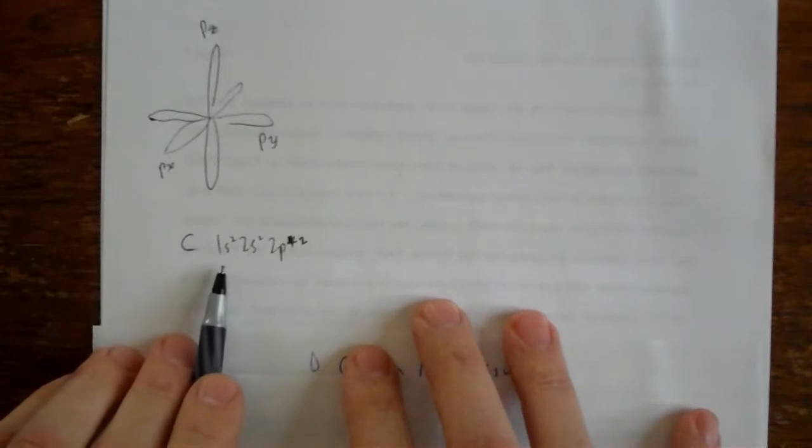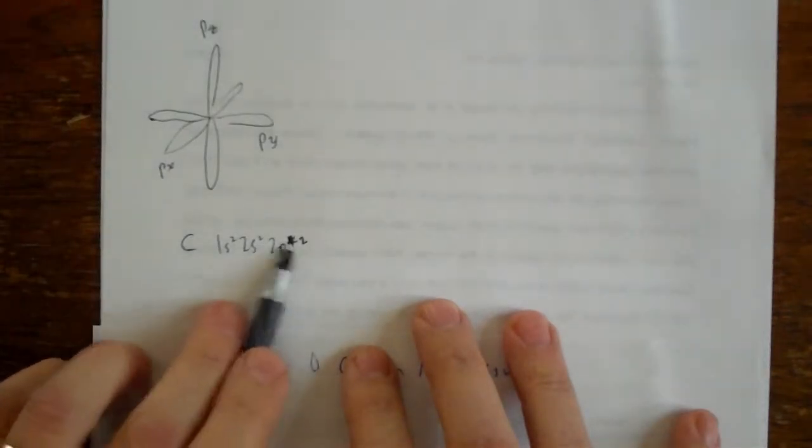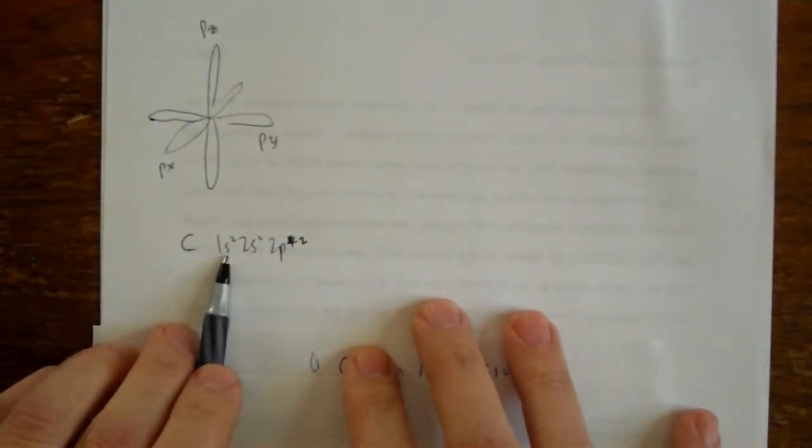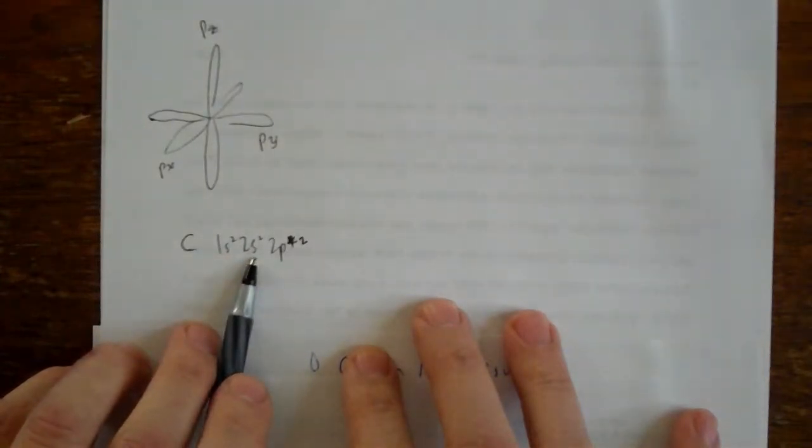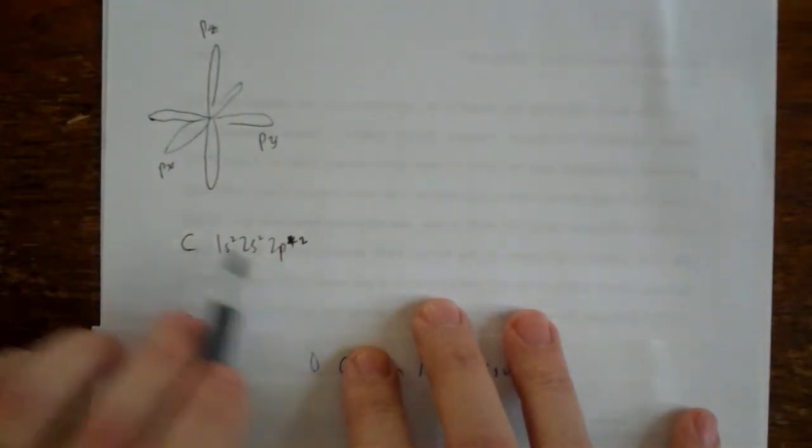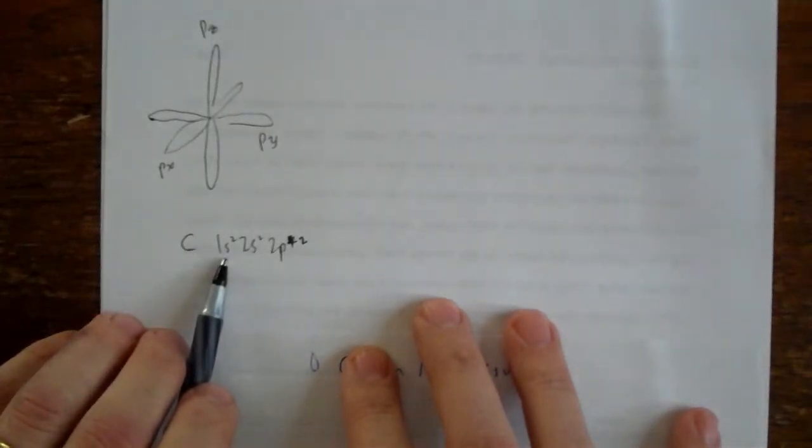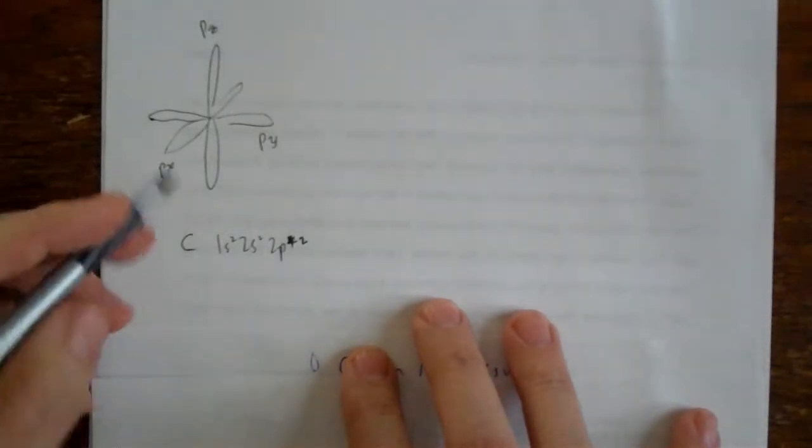And you may recall that this is the first shell, and here's the second shell. Here's a subshell, an S, and it has a shape. Here's another subshell, and it has a shape. There's another subshell, and it has a shape. You remember the subshell, S shape? It's spherical, right?